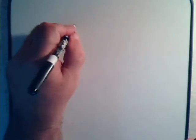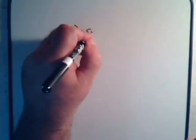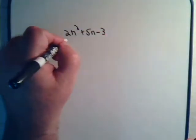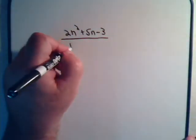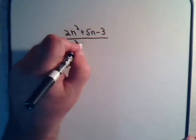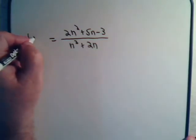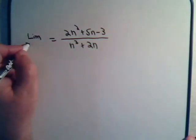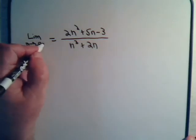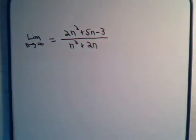Okay, let's look at this problem. Here we have 2 times n squared plus 5n minus 3 divided by n cubed plus 2n, and we want the limit of this as n approaches infinity. And again, if we just put n equals infinity, plus infinity divided by infinity again, that does us no good at all.